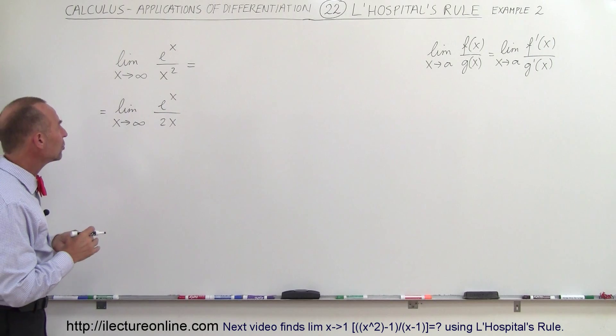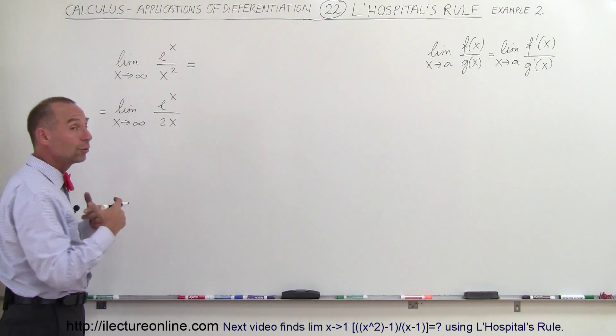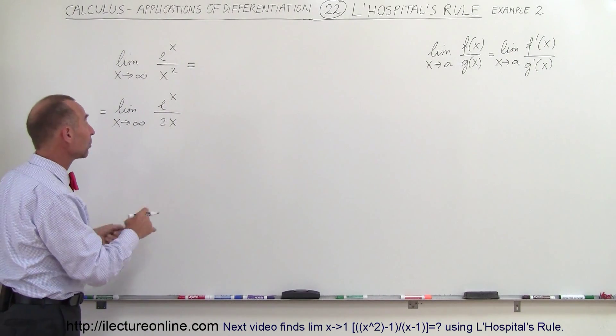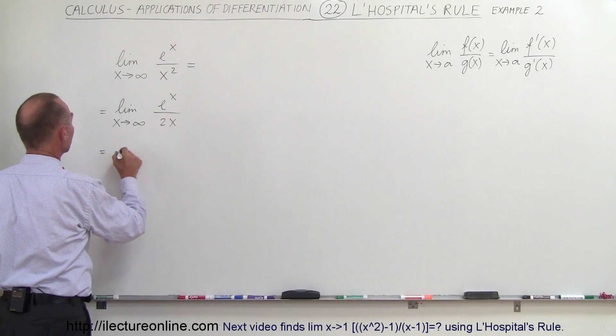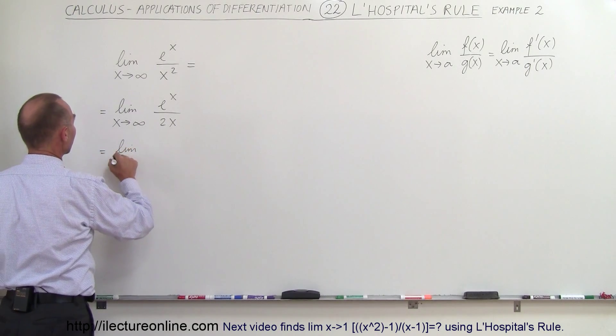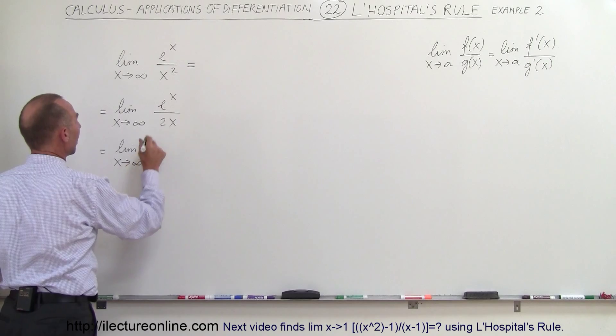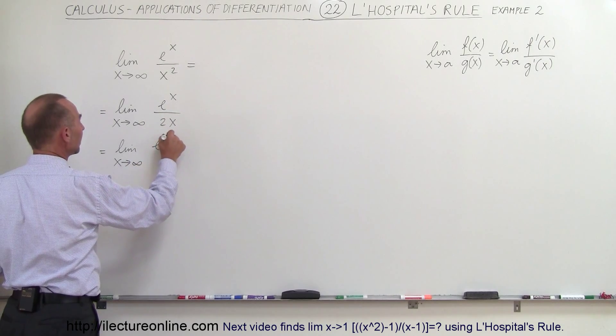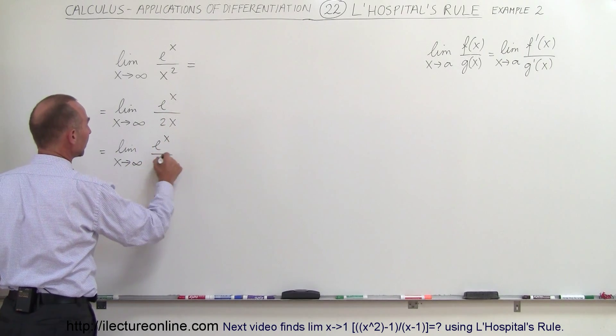So the next thing we can do is do the following. Take L'Hôpital's rule a second time, which is perfectly fine. So this is equal to the limit as x goes to infinity of e to the x. The derivative is still e to the x but the derivative of the denominator is 2.